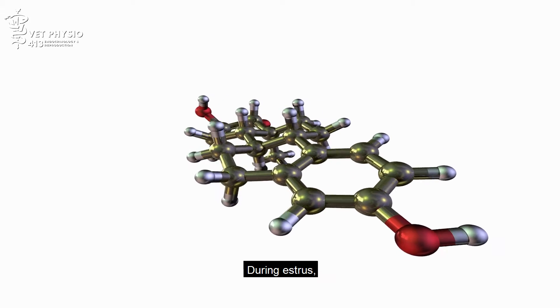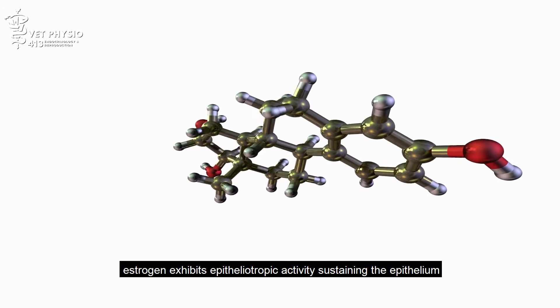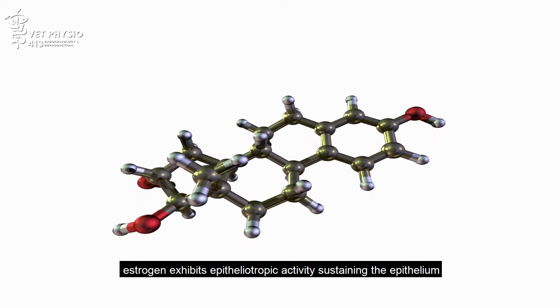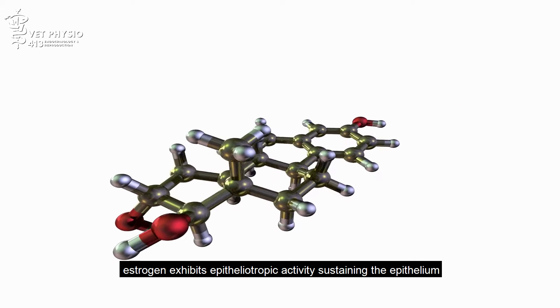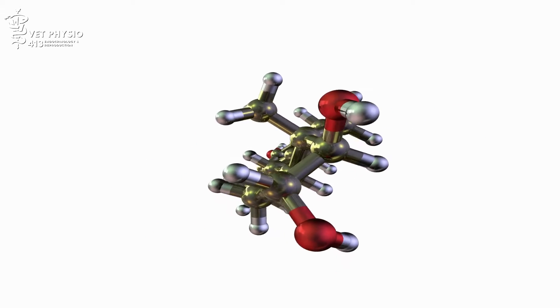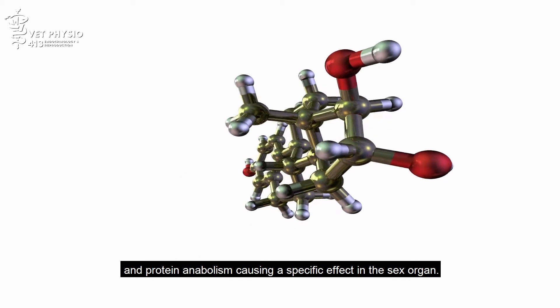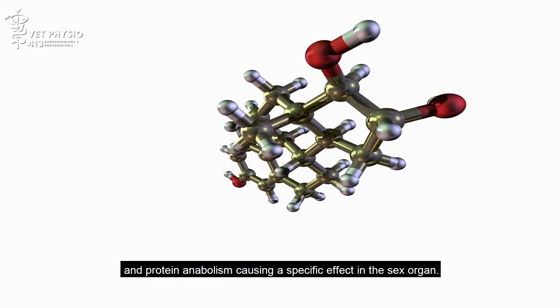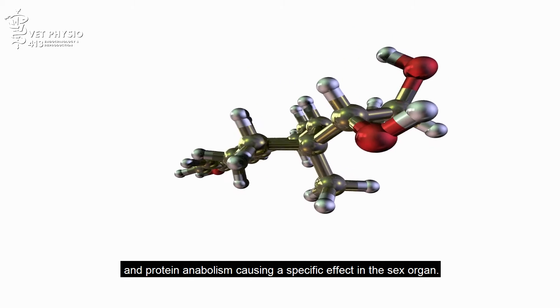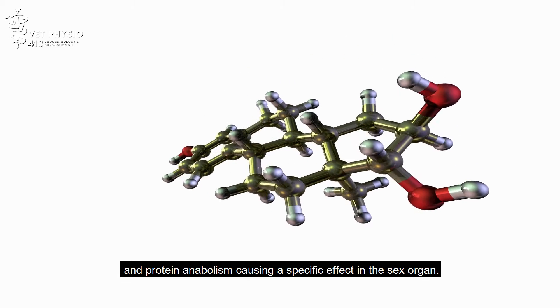During estrus, estrogen exhibits epitheliotropic activity, sustaining the epithelium and protein anabolism, causing a specific effect in the sex organ.